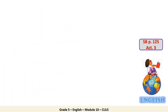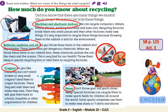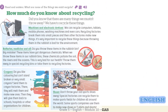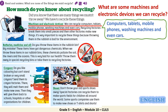So, after reading, what do you think the answer is to this question — what are some of the things we must recycle? Machines and electronic devices. Very good. In addition to batteries, medicine, and oil. And finally, crayons and shoes. Excellent answer. What are some machines and electronic devices we can recycle? We can recycle computers, tablets, mobile phones, washing machines, and even cars.